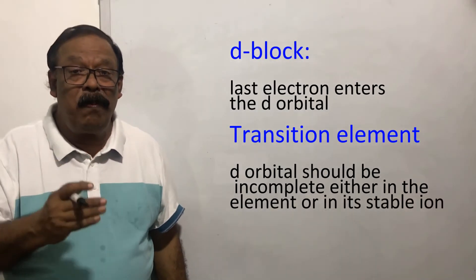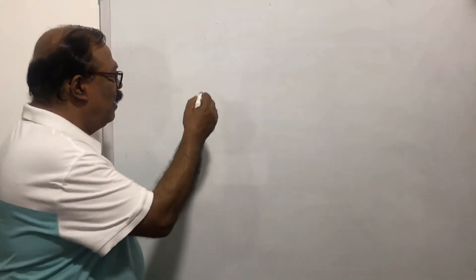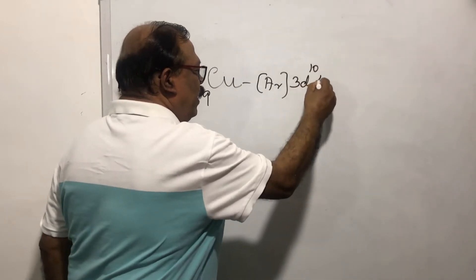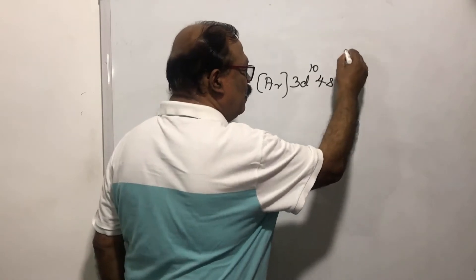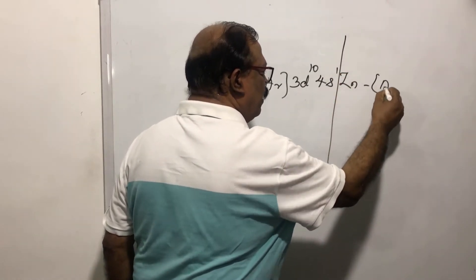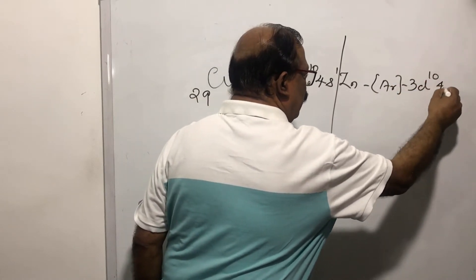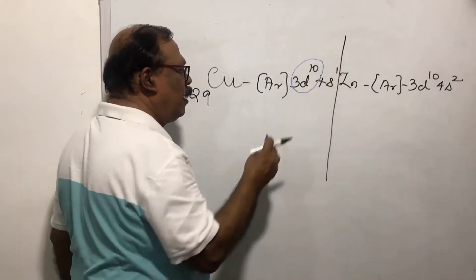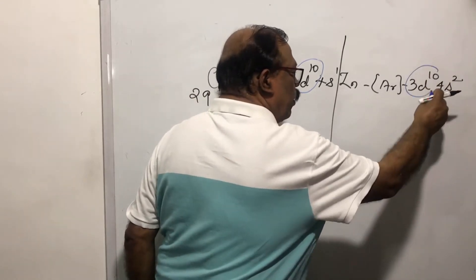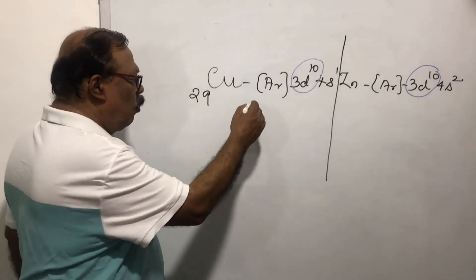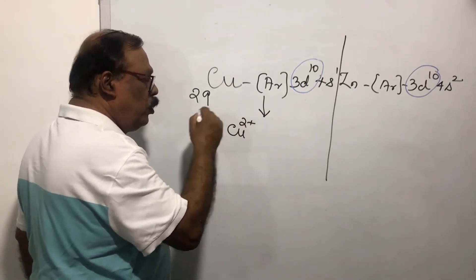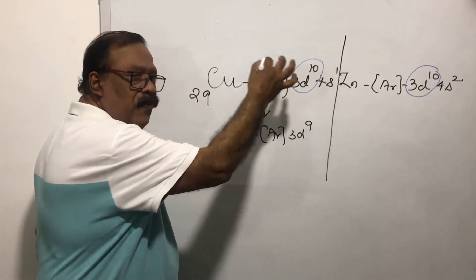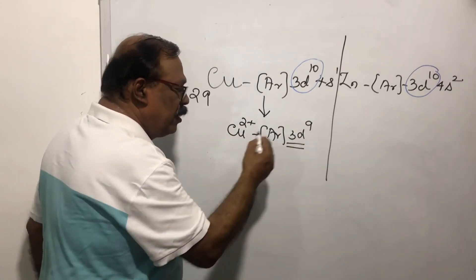To understand this, let us take the example of copper and zinc. Copper has atomic number 29, with the configuration argon 3d10 4s1. Zinc has the configuration argon 3d10 4s2. Both have 10 electrons in the 3d level. However, copper forms a Cu2+ ion having the configuration argon 3d9 — one electron from the s-orbital and one from the d-orbital is removed.